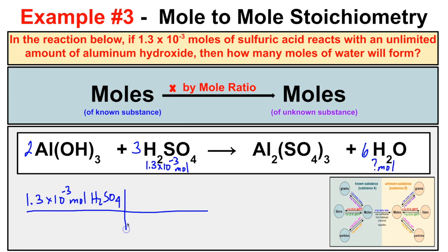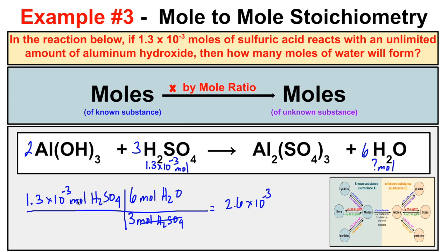The mole ratio compares the stuff we're trying to find to the stuff given: 6 mol H2O on top over 3 mol H2SO4 on the bottom. So: 1.3 × 10⁻³ × (6/3) = 2.6 × 10⁻³. The H2SO4 units cancel, leaving moles of water. If 1.3 × 10⁻³ moles of sulfuric acid reacts with an excess of aluminum hydroxide, it will produce 2.6 × 10⁻³ moles of water.